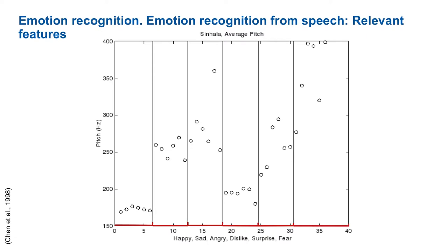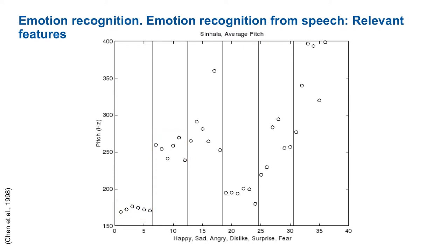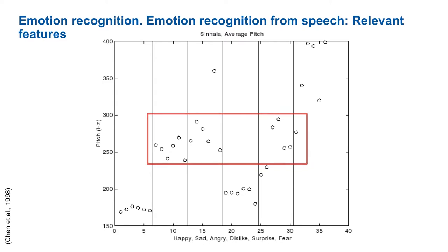You can see that pitch alone helps a little bit to classify emotions. For example, happy emotions show a lower pitch, while sad emotions show a higher pitch here. But there is a lot of overlap between the classes, so pitch frequency alone is not sufficient to unambiguously classify emotions.